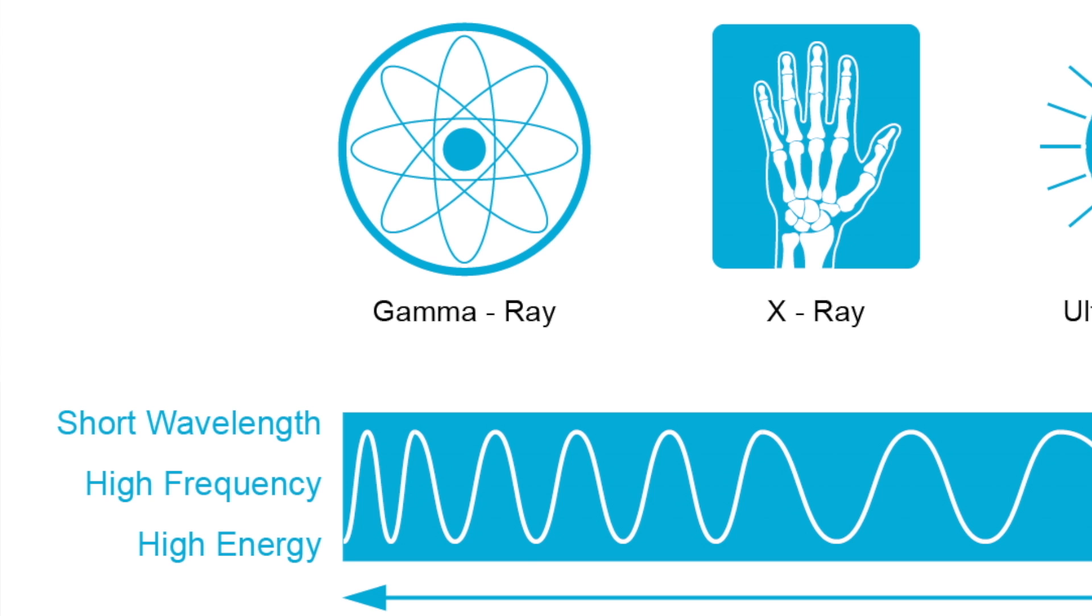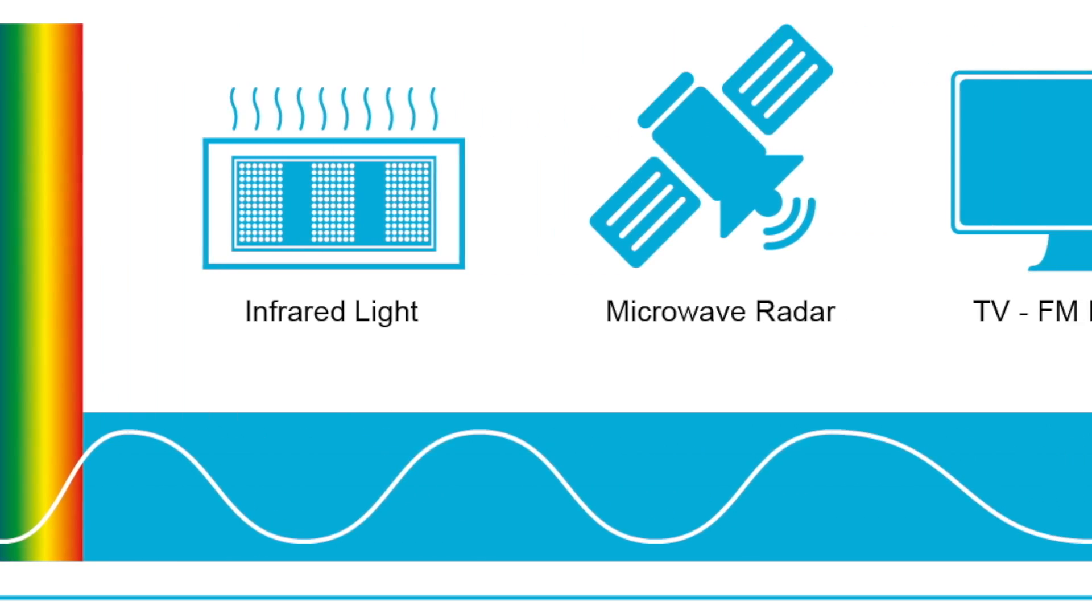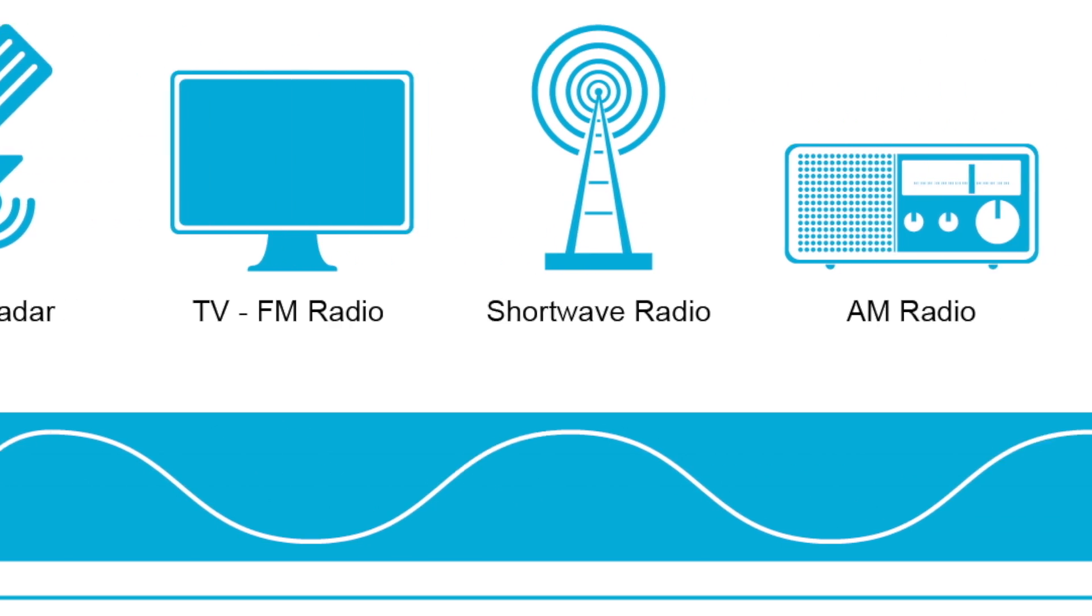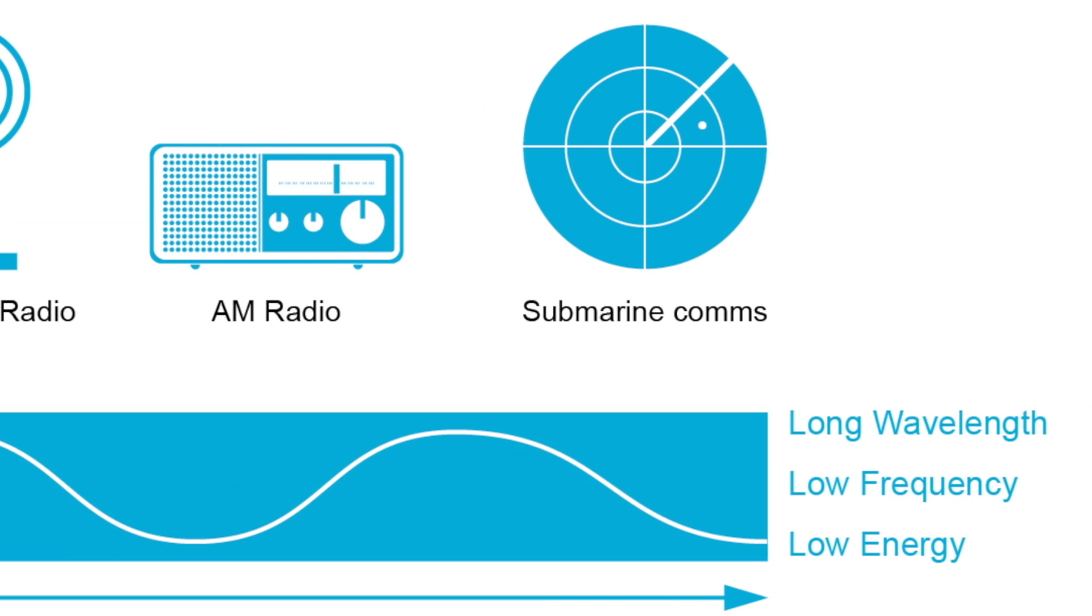So the electromagnetic spectrum covers an awful lot. Understanding the different strengths and weaknesses of the wavelength or frequencies that we make use of is vital to understanding how radio communications has become so successful.